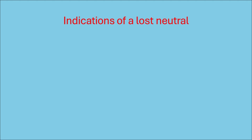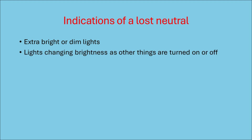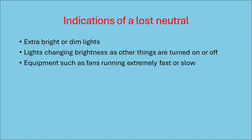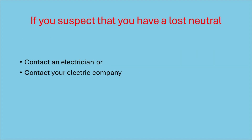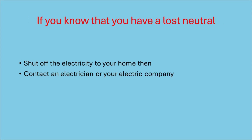So how do you know when you have a lost neutral? The main indication is lights burning dimmer or brighter than normal — lights that get dimmer or brighter as other equipment is turned on or off. If a fan or other piece of equipment seems to be running faster or more sluggishly than normal, you might have a lost neutral. If you suspect a lost neutral, you should immediately call an electrician or your electric company. If you feel quite confident that you've got a lost neutral, it's probably worth turning off the main breaker and killing the power to your house until someone gets out there to check it out.